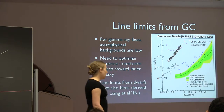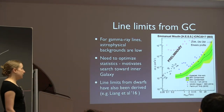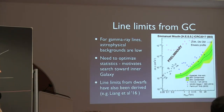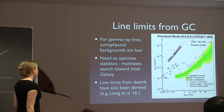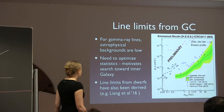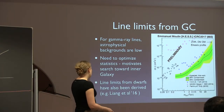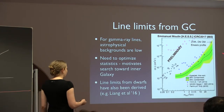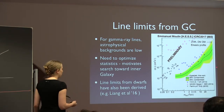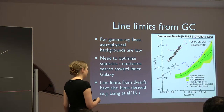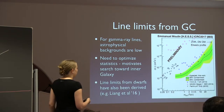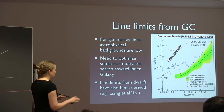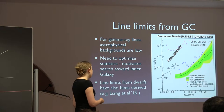The galactic center is also a good place to look for line signals because the dark matter density may be very high and you don't need to worry much about background. There are line limits from dwarfs as well, though much weaker, and both assume the Einasto profile — if the profile is cored, these limits will be weaker.